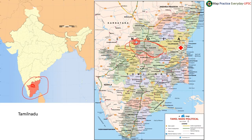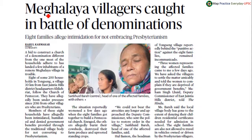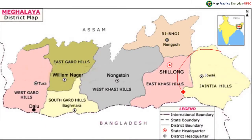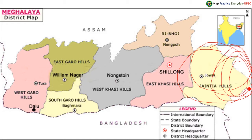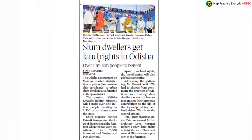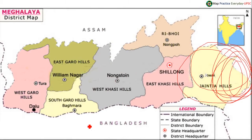Meghalaya villages caught in battle of denominations — this news is emerging from East Jaintia Hills of Meghalaya. In the map of Meghalaya, Jaintia Hills are located in the eastern part of Meghalaya and East Jaintia Hills might be located here. When it comes to borders, Meghalaya is landlocked by the state of Assam and Bangladesh.